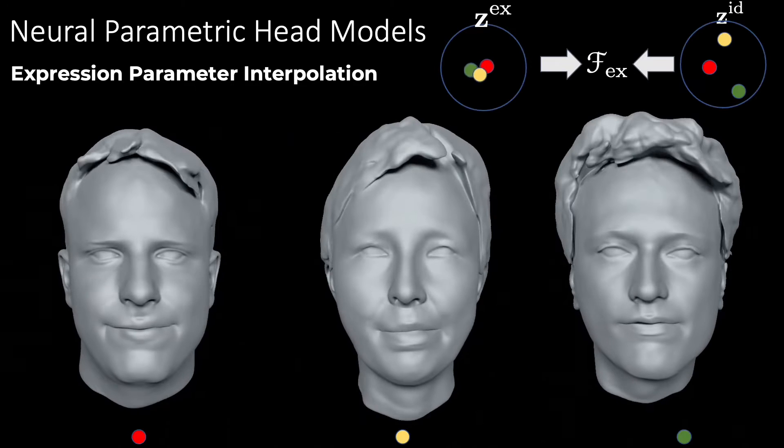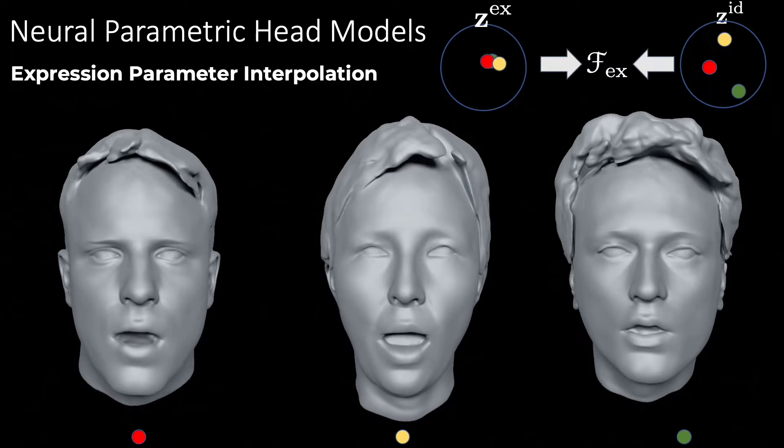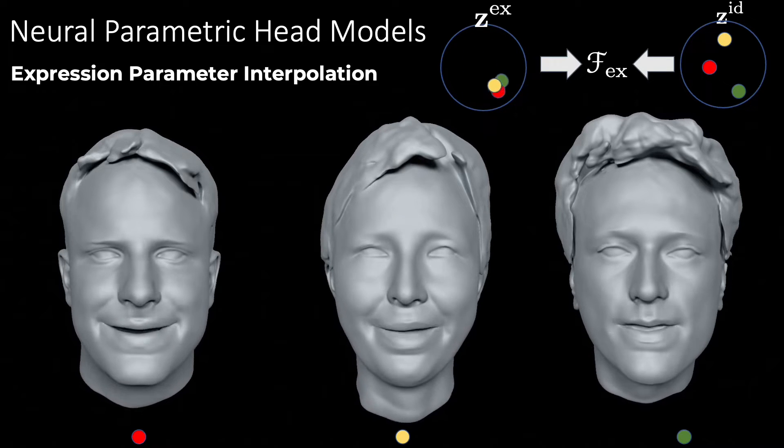Similarly, interpolating between our learned expression codes while keeping the identity parameters fixed yields realistic facial movements while maintaining the identity of the person.